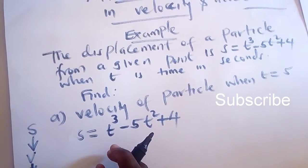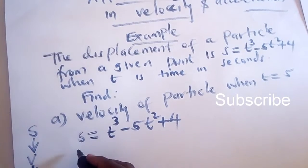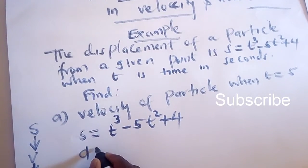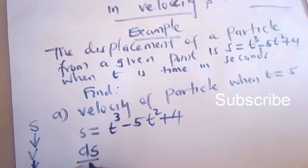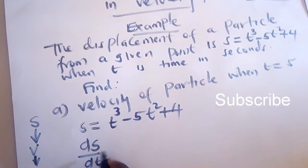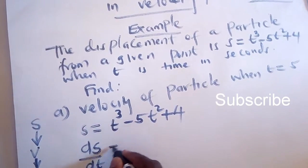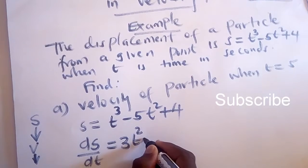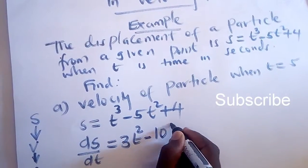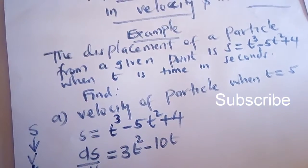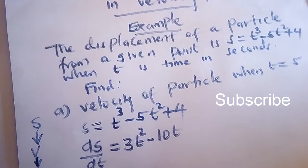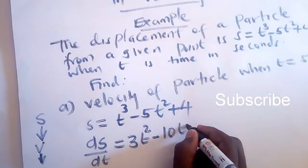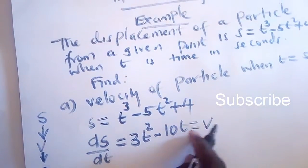First of all, we are supposed to get velocity in terms of t by finding the derivative of s with respect to time, ds/dt. This is given by 3t squared minus 10t. That is the velocity in terms of t.